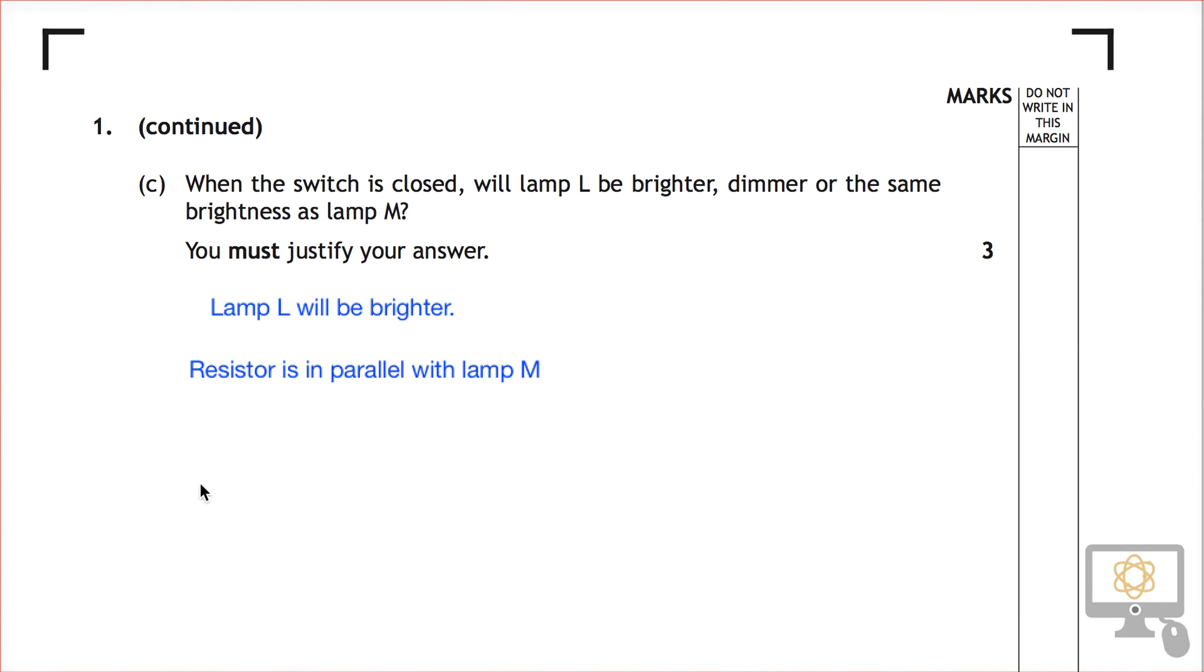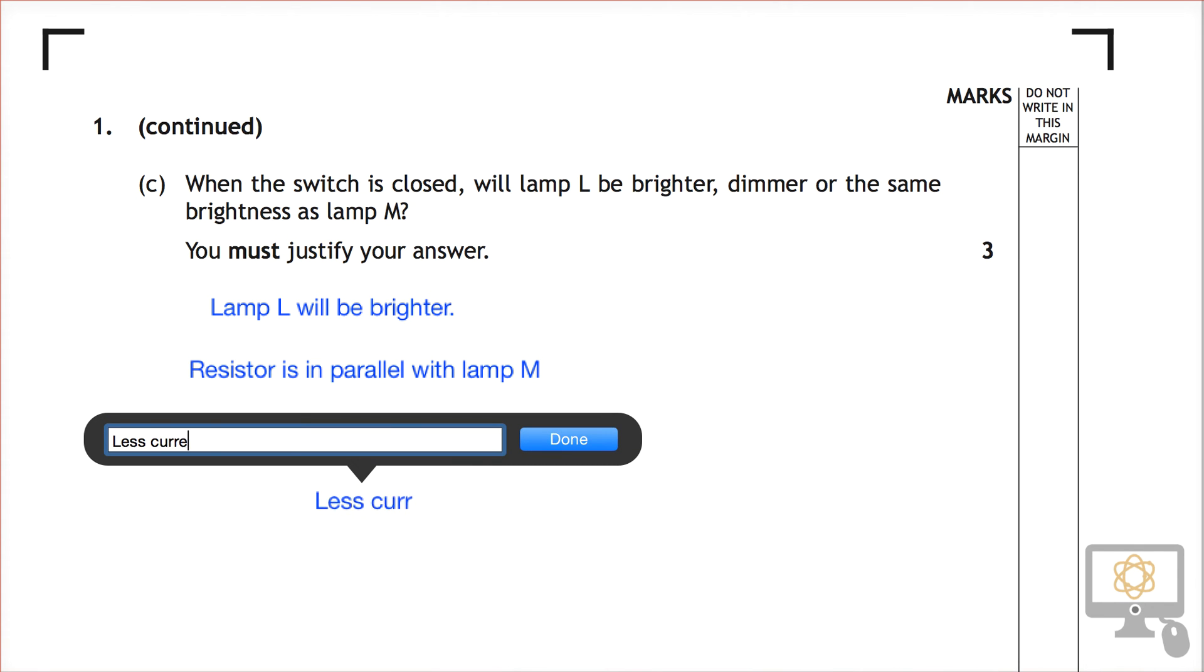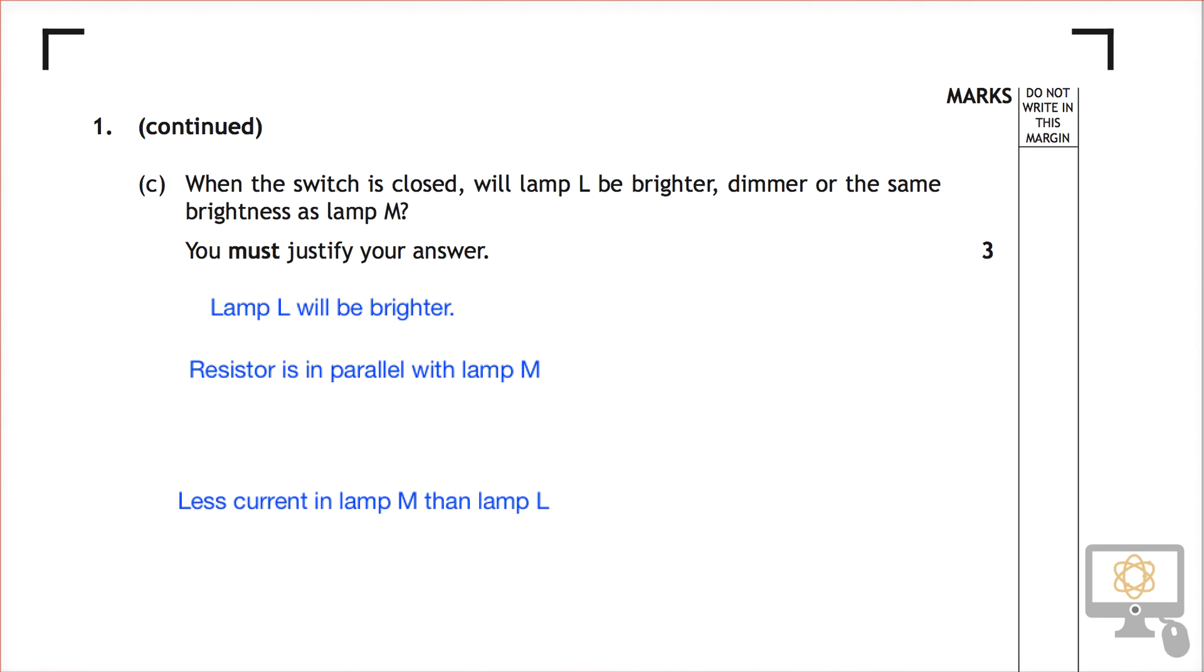So we'll write that in down here. So let's do that now. Less current in lamp M than lamp L. Okay, so that's effectively our answer complete.